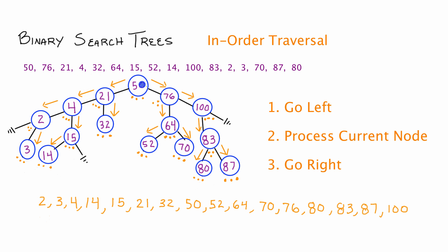As you can see, following this simple in-order traversal process has allowed us to extract the key values from our binary search tree in order from lowest to highest. This only works because we set up our binary search tree correctly and performed an in-order traversal. If the binary search tree was implemented wrong, values might be mixed up. But assuming we follow the less-than/greater-than property for every node in a binary search tree and do our in-order traversal correctly, the order in which we process the nodes will always be from lowest to highest key. I just wanted to explain this in-order traversal process before starting to write code. Hopefully you found this tutorial helpful — look forward to writing some code in the next few tutorials.